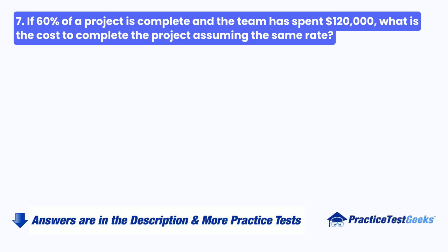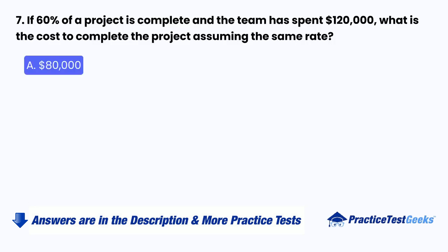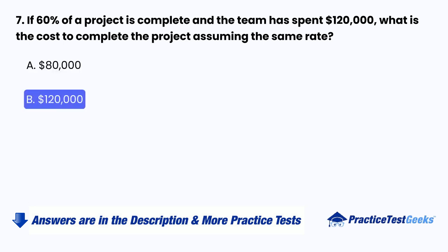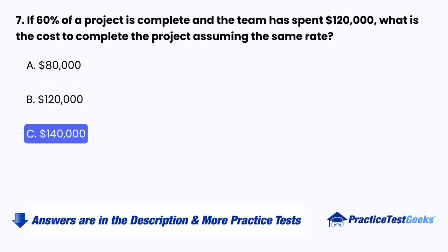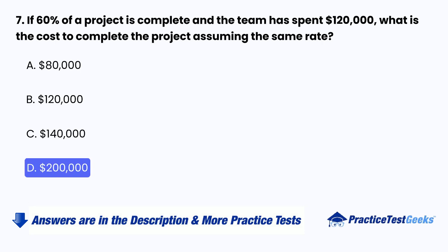Question 7: If 60% of a project is complete and the team has spent $120,000, what is the cost to complete the project assuming the same rate? A. $80,000. B. $120,000. C. $140,000. D. $200,000.